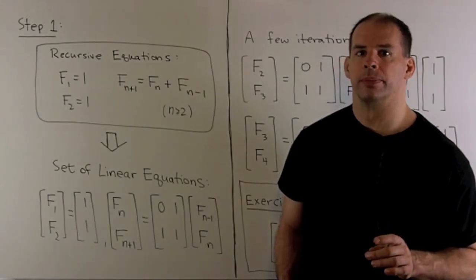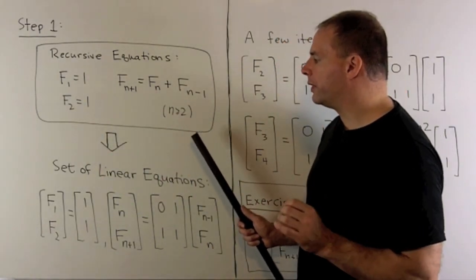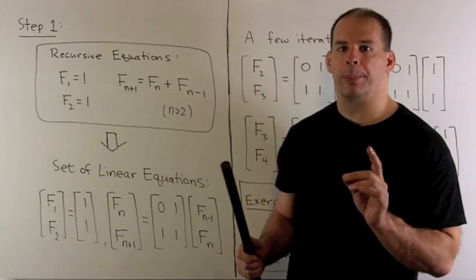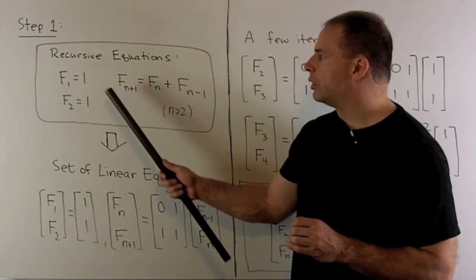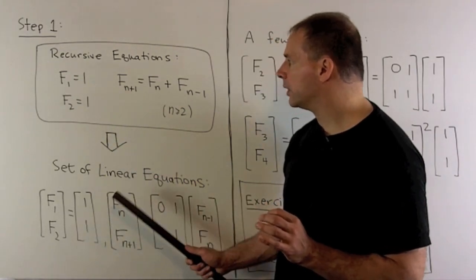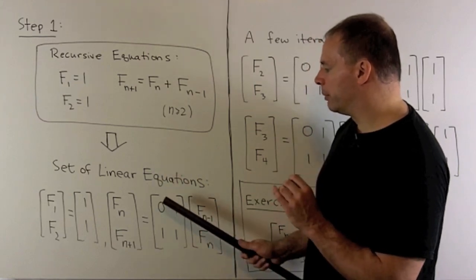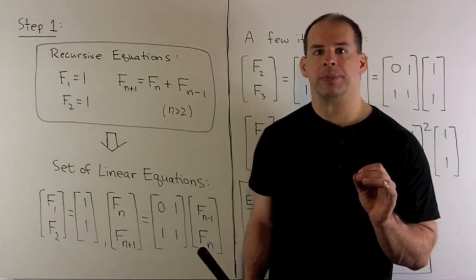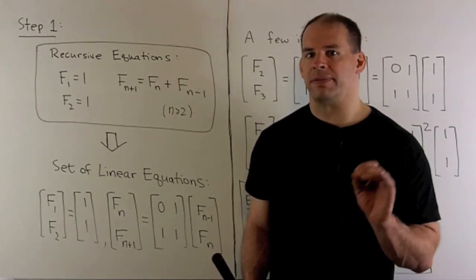Now let's bring in the linear algebra. First step: we take the defining relations for the Fibonacci numbers and encode them in matrix-vector form. This is a linear equation, so I can set it up as a matrix-vector product. We have F1 equals 1, F2 equals 1, represented as the vector [1, 1]. For our recursive relation, we use this matrix-vector product. The first row times our vector gives F sub n — that equation has no new content, but I need it to have a square matrix. The second row gives F sub n-1 plus F sub n, which equals F sub n+1.